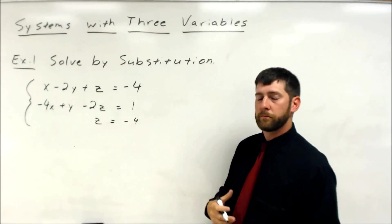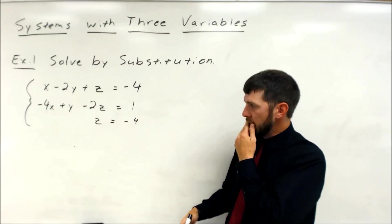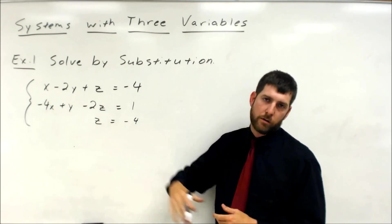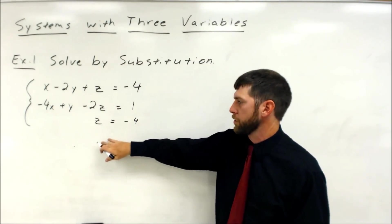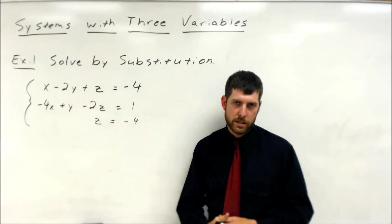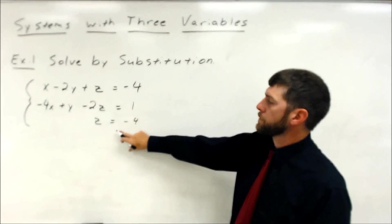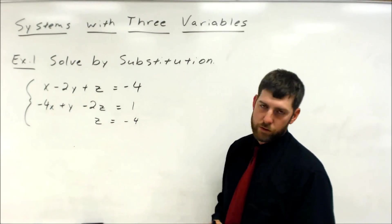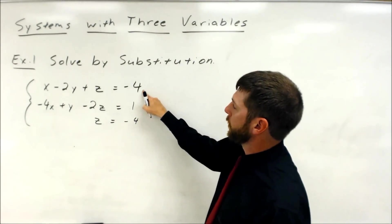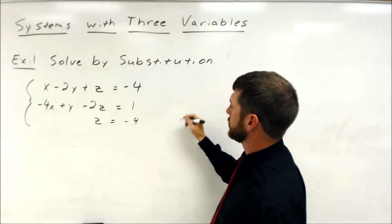So, substitution: pick one, plug it in for the other one. I always use this if they give me one that's already solved out. So that's the strategy I'm going to use here — if they give me one that's really easy to solve out. In this problem, z equals negative four; I'm going to substitute that into both of the other two equations.